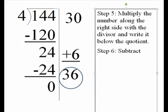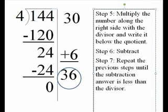Step 6, subtract. In this case, it's 144 minus 120, which equals 24. Step 7, repeat the previous steps until the subtraction answer is less than the divisor. In this case, we now have 24, so we have to ask ourselves,